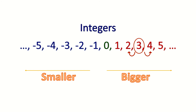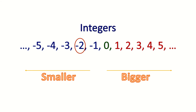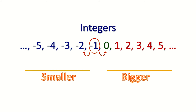Now the same counts for the negative integers. Negative 3 is to the right of negative 4, so negative 3 is bigger than negative 4. And negative 3 is to the left of negative 2, so negative 3 is smaller than negative 2. Negative 2 is bigger than negative 3, but smaller than negative 1. And negative 1 will be bigger than negative 2, but negative 1 will be smaller than 0.